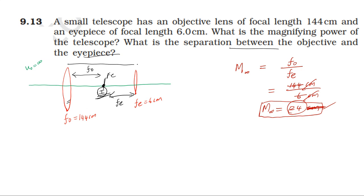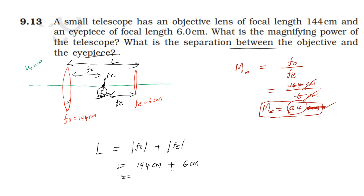For the second part, the separation between the objective lens and the eye lens is given by the formula F₀ plus Fₑ. F₀ is 144 cm and Fₑ is 6 cm, so 144 plus 6 equals 150 cm. So the distance between the two lenses is 150 cm.